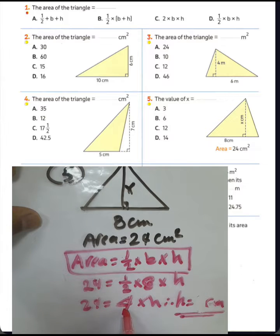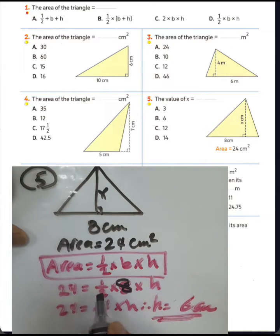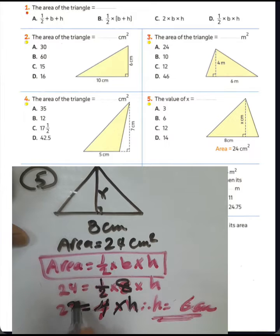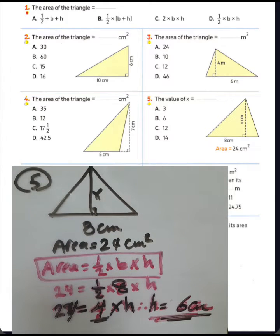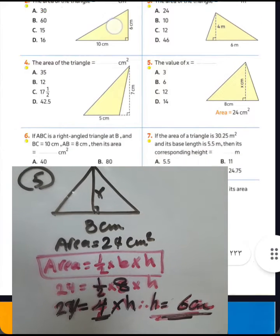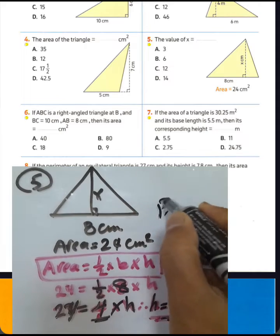Correcting: the base was 8, half of 8 equals 4. Then 4 times what equals 24? 4 times 6 equals 24, so the height is 6 centimeters. The answer is letter B.